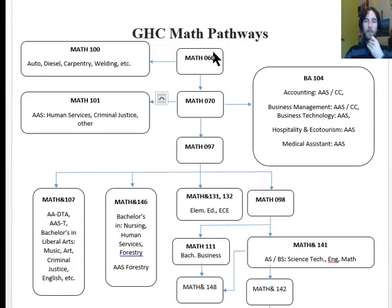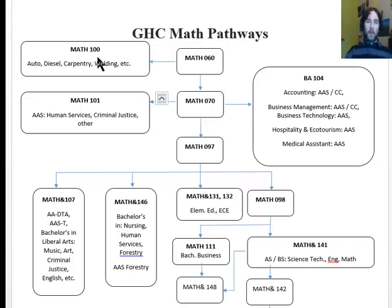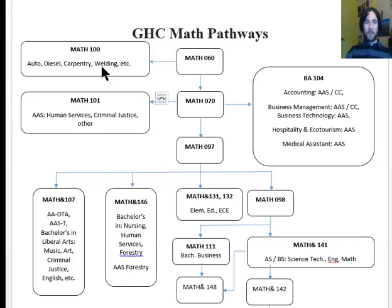From the top, Math 60 Arithmetic leads to Math 70, another pre-college math class, or Math 100. Math 100 is the math requirement for many vocational technical programs such as Auto, Diesel, Carpentry, and Welding.